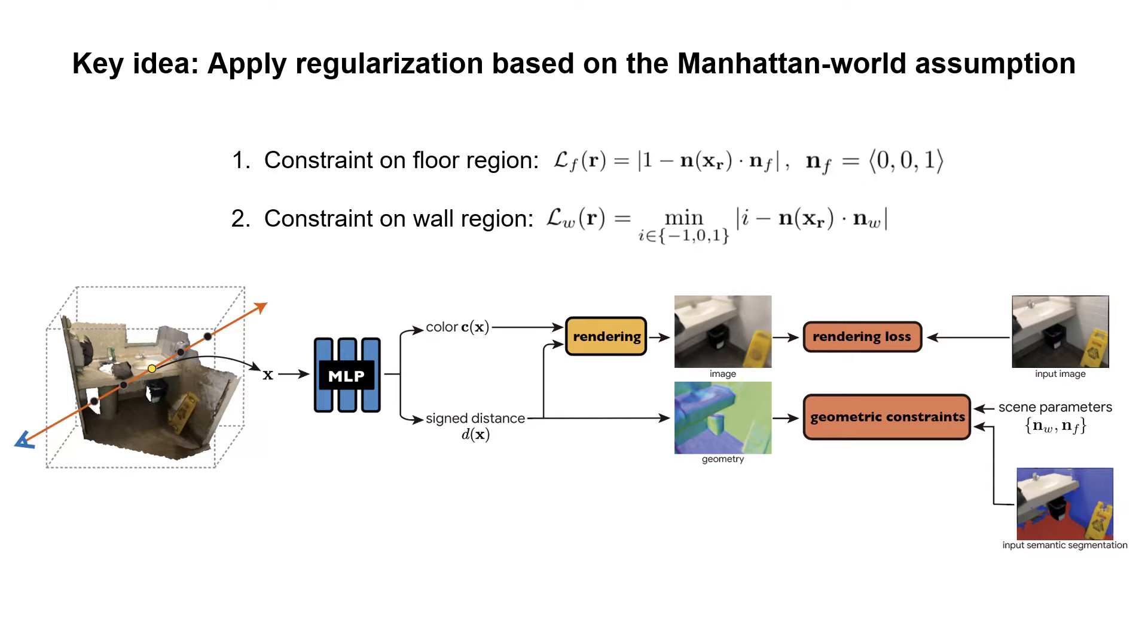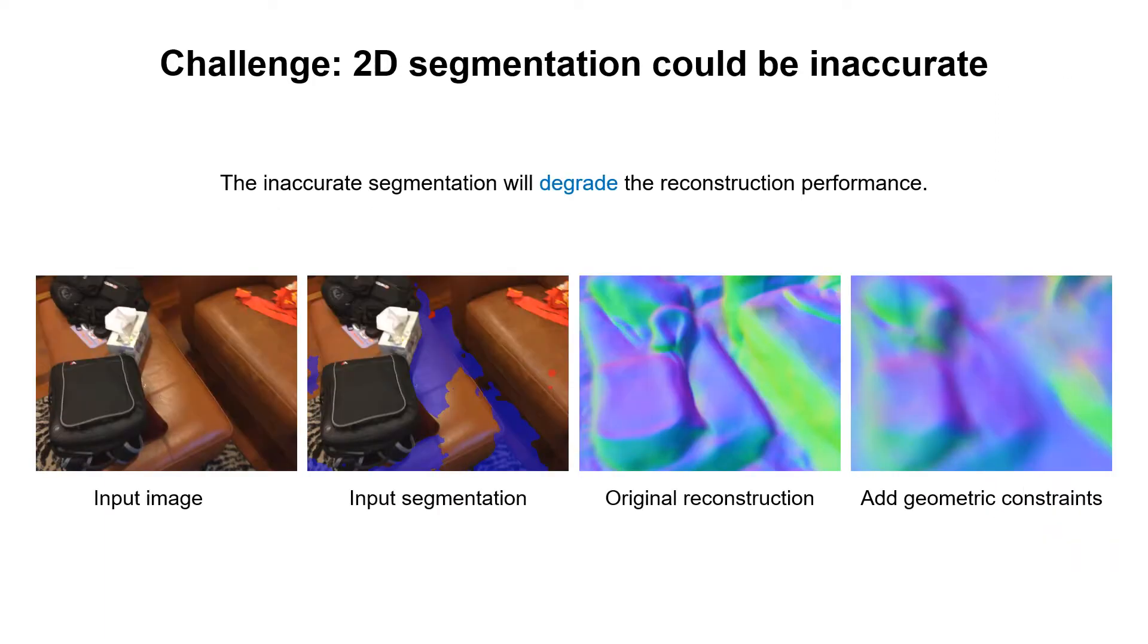Specifically, we enforce normal directions of floor regions to be straight up. Then we introduce a learnable normal and enforce normal directions of wall regions to be either parallel or orthogonal with the learnable normal. Applying geometric constraints can improve the reconstruction quality in most cases.